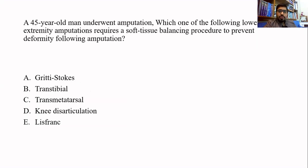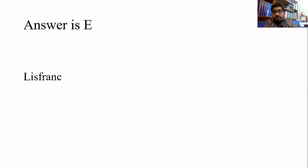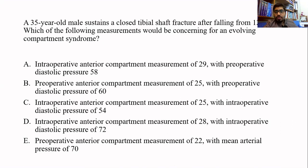The next question: which lower extremity amputation requires a soft tissue balancing procedure to prevent deformity following amputation? The keyword here is 'soft tissue balancing,' which essentially refers to a tenotomy of a tendon. The best possible option is E — Lisfranc amputation — because it is associated with equinovarus deformity, as discussed in the previous question.